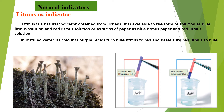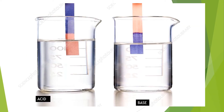In distilled water, the color of the paper does not change — it just gives a purple color. Acids turn blue litmus to red when dipped in acidic solution, and bases turn red litmus to blue when dipped in basic solution. This is clearly shown in the picture.